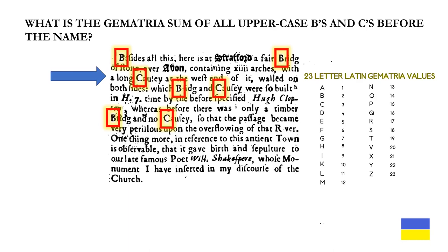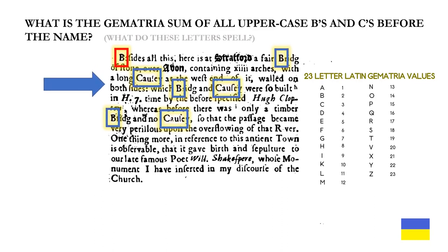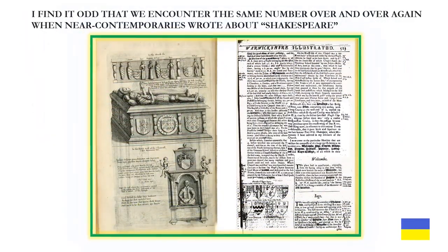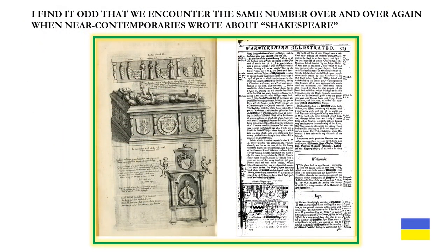What is the gematria sum of all uppercase B's and C's before the name? Act as if Will Shakespeare is a type of barrier. And what do these letters spell? Think the Wizard of Oz. Are they all the same number, and what do you think that means? I find it odd that we encounter the same number over and over again when near-contemporaries or contemporaries wrote about Shakespeare.